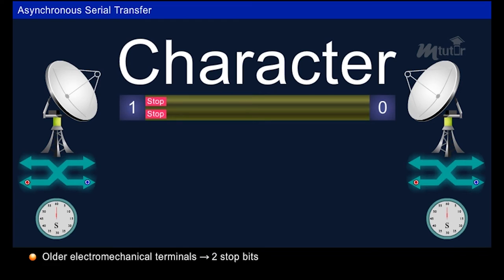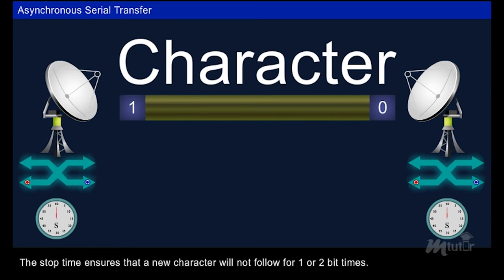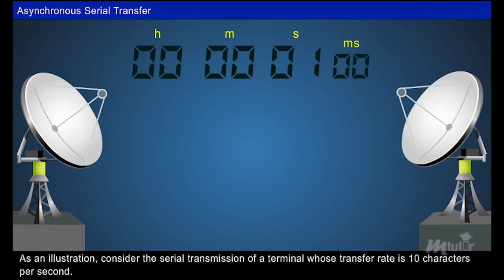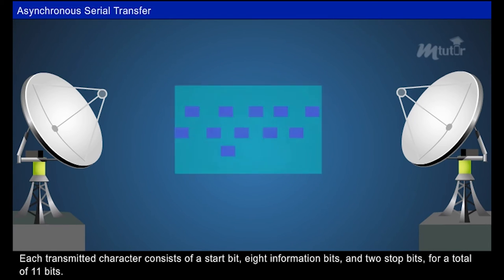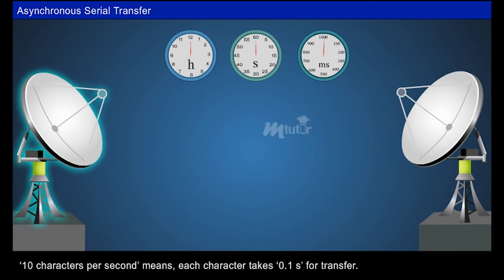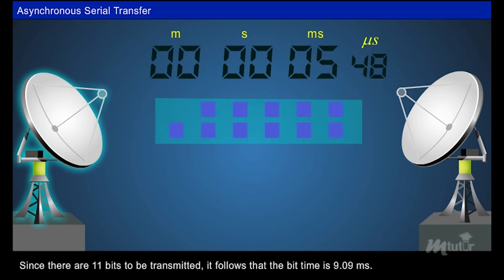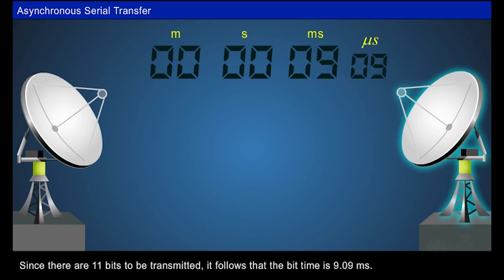The length of time the line stays in this state depends on the amount of time required for the equipment to resynchronize. Some older electromechanical terminals use two stop bits, but newer terminals use one stop bit. As an illustration, consider a terminal with a transfer rate of ten characters per second. Each transmitted character consists of a start bit, eight information bits, and two stop bits, for a total of eleven bits. Ten characters per second means each character takes 0.1 second, so the bit time is 9.09 milliseconds.